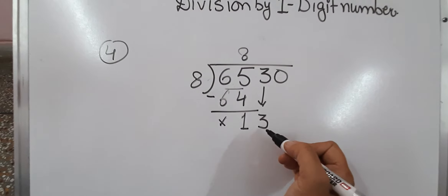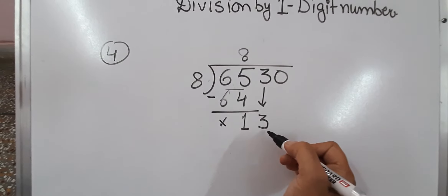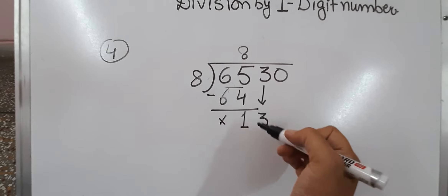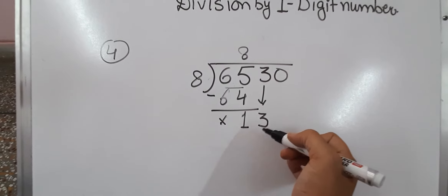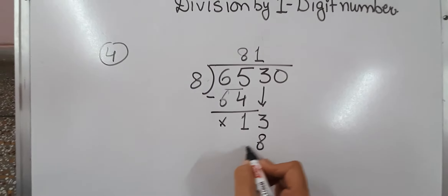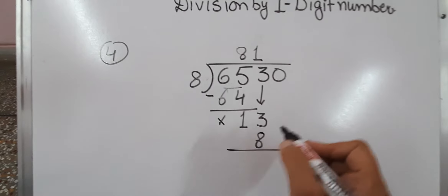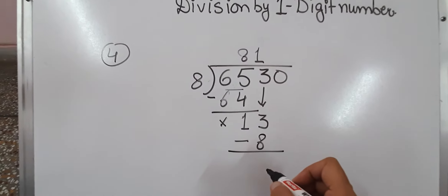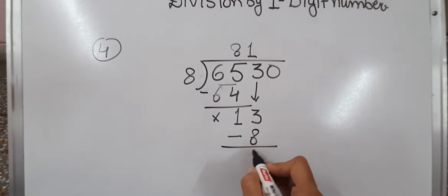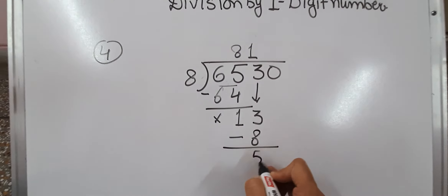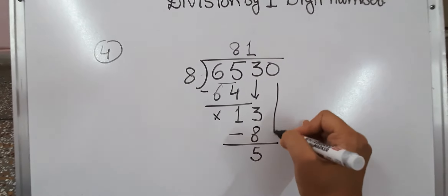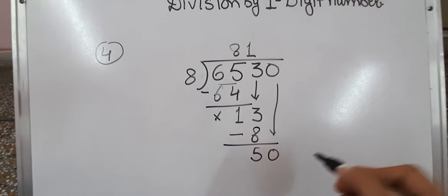Now we have 13. In the table of 8: 8×1 is 8, 8×2 is 16 — so 8×1 is 8, which is just smaller than 13. Now we subtract and we get 5. This 0 will come down.